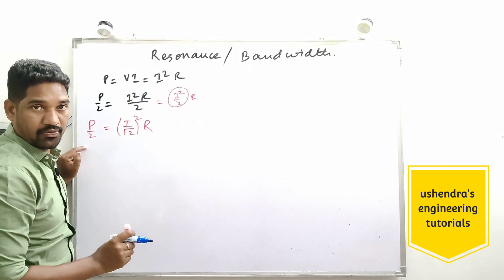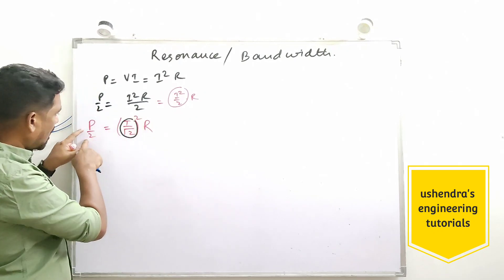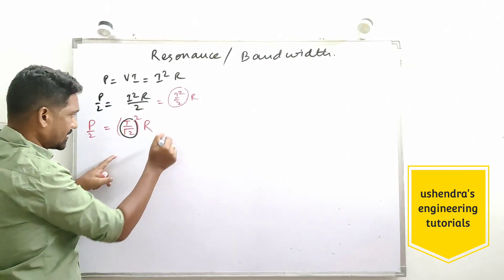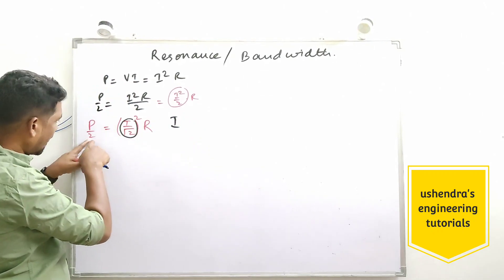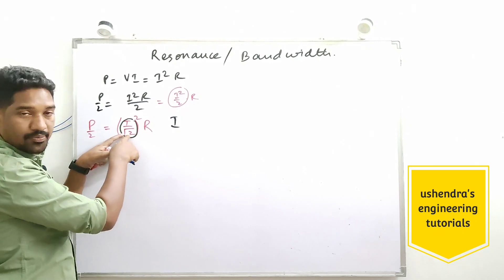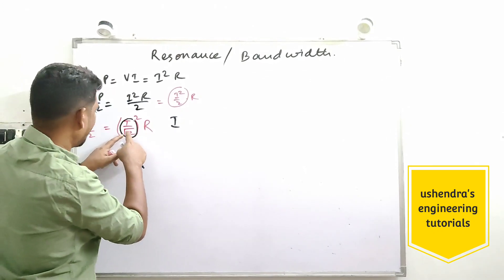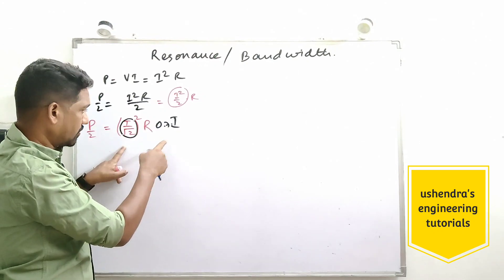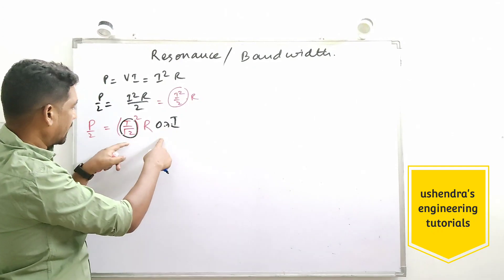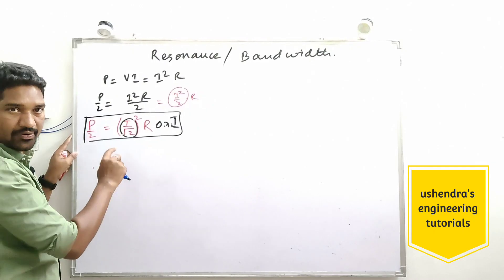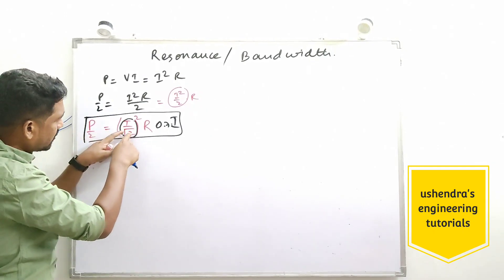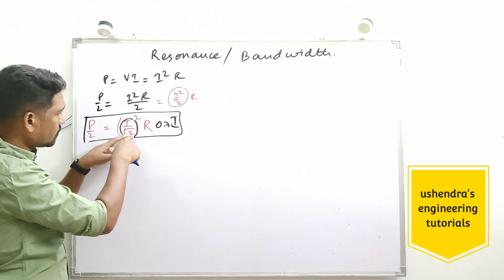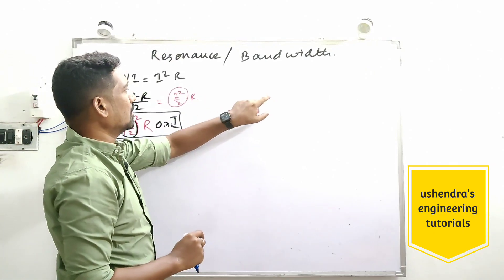At the half-power frequency, the current is reduced to 1/√2 times its maximum value. If the maximum is I, then at half power the current becomes 0.707 × I — since 1/√2 ≈ 0.707. Remember this statement: at half power, the current is reduced by the factor 0.707, i.e., reduced to 1/√2 times its maximum value. We will make use of this in the derivation.